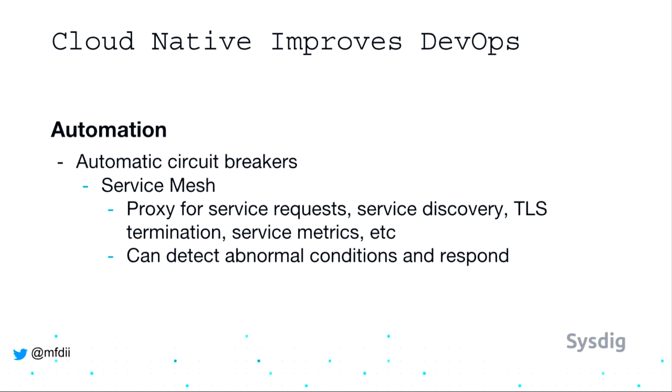There are several vendors in the service mesh space: Buoyant with Linkerd, Envoy, Istio, and Consul Connect. The idea is building a proxy for service requests. In a microservices world, we don't care about individual containers — we care about the overall health of the service. You have one common instrumentation point to find out when a service goes abnormal, automatically turn that service off, detect those conditions, and respond appropriately. Cloud native has a lot of these promises. Service mesh is still early days — probably around where Docker in production was in 2013 — but the momentum is definitely behind these projects.